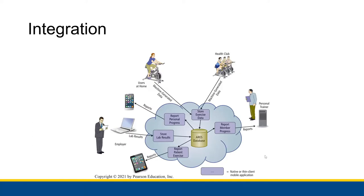Here's an example of how a fictional company called Aries is able to eliminate those inter-enterprise silos by collecting data from all of those sources — working with health clubs, users at home, home exercise equipment manufacturers, labs, and personal trainers — in order to collect a whole bunch of information from all these data-generating sources, and then give reports back out to mobile devices owned by the employee, a personal trainer, or their employer. All of that is done through the cloud, where they generate those reports and send them out.